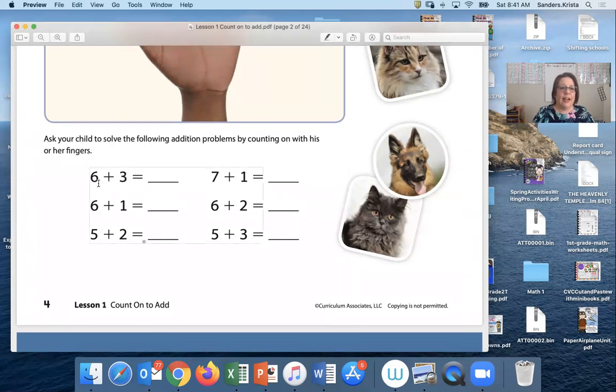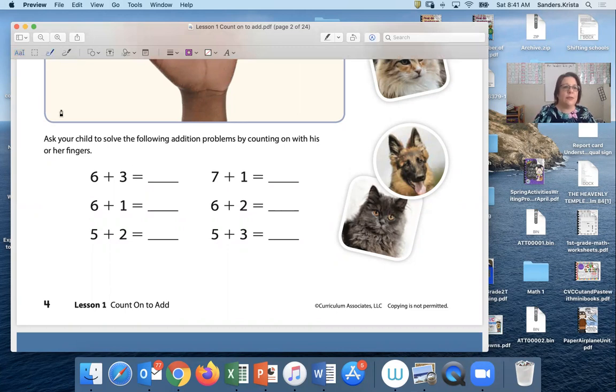So here I have 6 plus 3. Now, do I have my tools? I need my tool, right? So I'm gonna circle the number that's greater between 6 and 3.